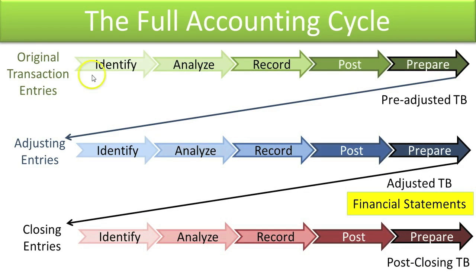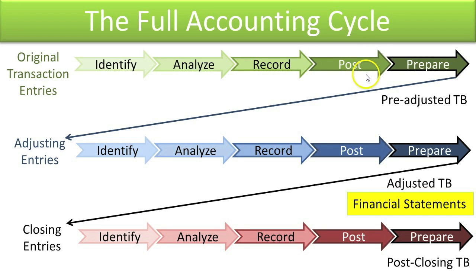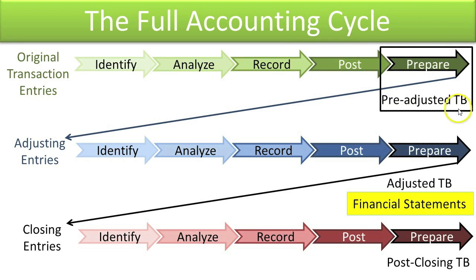In prior videos, we learned how to identify economic transactions, analyze them, determining their increase or decrease effect on various accounts, converted that into debit and credit journal entries in the general journal, and posted the journal entries to the account ledger so their balances could be determined. Now we're ready to prepare the pre-adjusted trial balance to make sure that the total debit balances equal the total credit balances for all accounts. We do that so we don't leave a mistake in the accounts before we go too far — it saves us time to catch mistakes earlier rather than later.